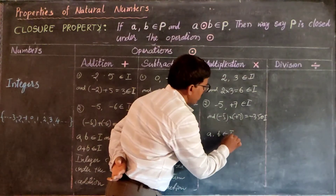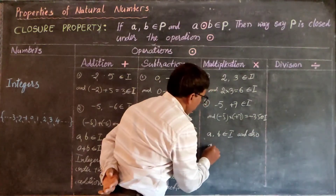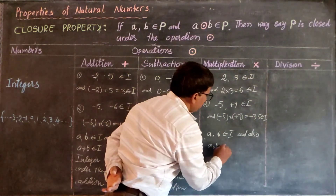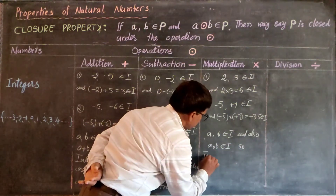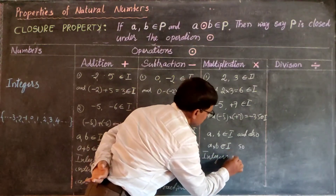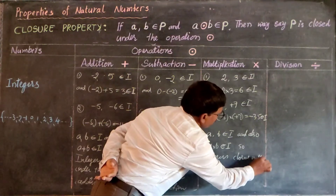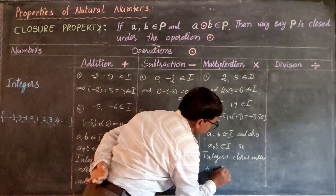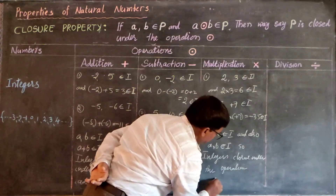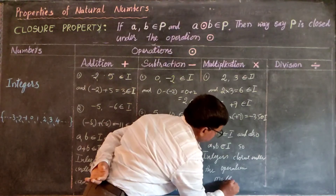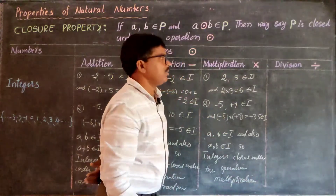So if a, b belong to integers, then a into b also belongs to integers. Integers are closed under the operation multiplication.